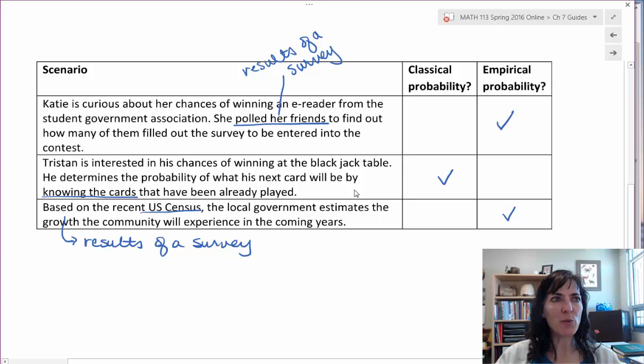Tristan's interested in his chances of winning at the blackjack table. He determines the probability of what his next card will be by knowing the cards that have already been played. He's counting cards.